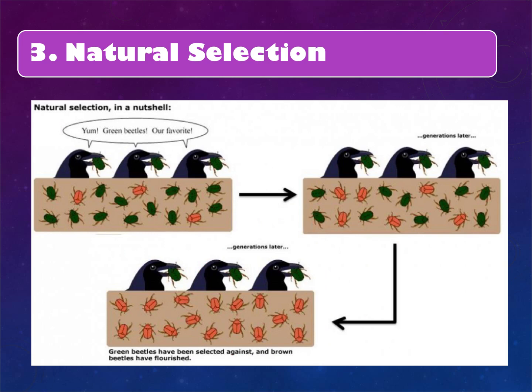Natural selection is also a piece of microevolution. Looking at an example: birds pick the green beetles because they don't blend in as well as the orange beetles in the sandy, beige environment. Natural selection takes over and the better-camouflaged trait becomes more common in the population.